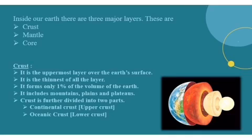As you can see, there are different layers which are visible in an onion when you have a cross section. Similarly, inside our earth there are three major layers. These are crust, mantle, and core. Now we will study in detail about these layers of the earth.